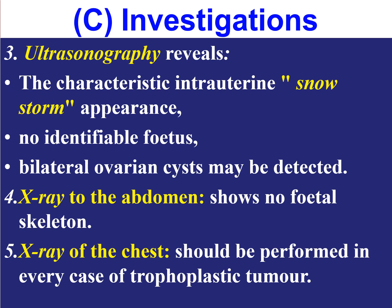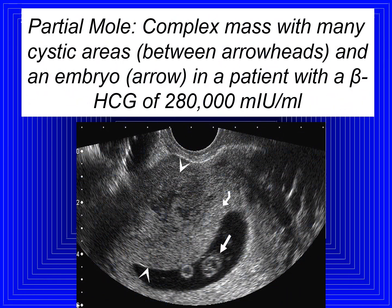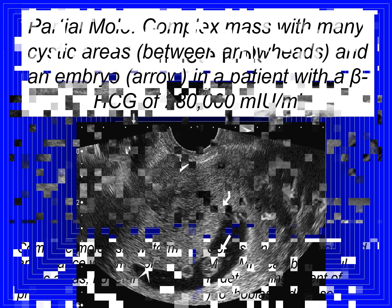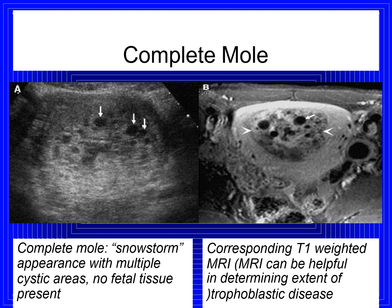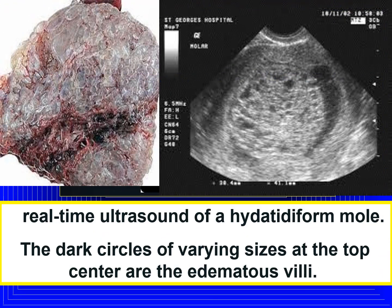On X-ray of the skeleton, no fetal skeletal shadow will be visible. Chest X-ray should be performed in every case of trophoblastic tumor. In partial mole, ultrasound shows a complex mold with many cystic areas and an embryo, with a beta-HCG of 28,000 milli-units per ml. In complete mole, the snowstorm appearance with multiple cystic areas and no fetal tissues is seen. MRI can also be helpful in determining the extent of trophoblastic disease.